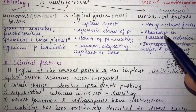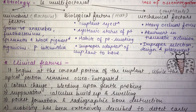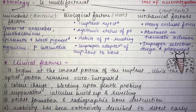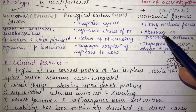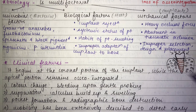Mechanical factors are implant-related. Heavy occlusal forces can lead to high stress or micro-fractures in the coronal bone-to-implant contact, causing loss of osseointegration at the neck of the implant. Abutment with traumatic occlusion — when occlusion is not in harmonious relation — can also cause peri-implantitis, as can improper selection, design, and placement of the implant.